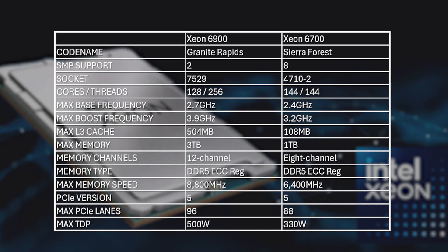And it's not just the types of cores that are different either. Key differences include the number of threads, with Xeon 6900 having up to 128 cores and 256 threads, whereas Xeon 6700 have up to 144 cores and 144 threads. The reason Xeon 6700 don't have more threads than cores is that E cores don't support hyper-threading.